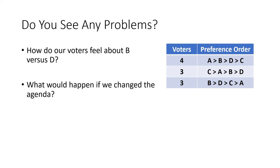Do you see any problems with this method? Let's look at how voters feel about just B versus D. What you should notice is that every single voter in the entire election likes B better than D — 10 out of 10, ten versus zero, B is preferred over D. So how did candidate D, which every single voter likes someone else better than, end up winning the election? The reason is that B got eliminated early in the agenda. If we changed the agenda so that B didn't get knocked out so early, maybe B can survive to the final round and end up beating D.